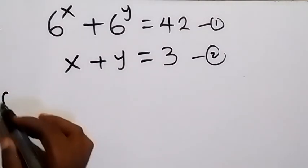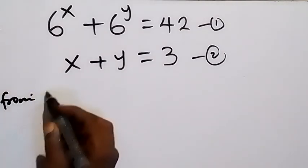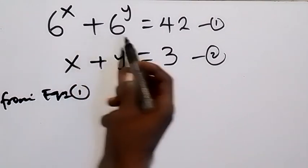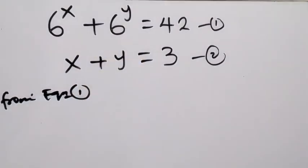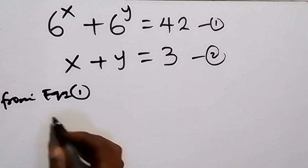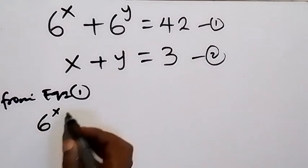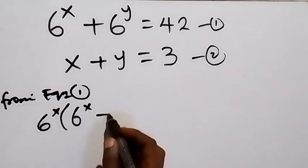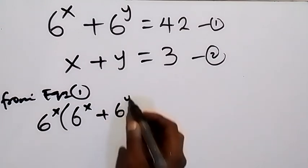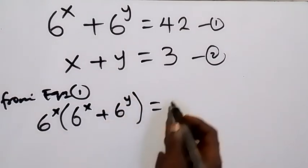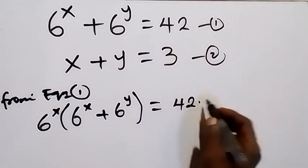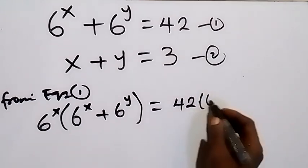From equation 1, let's multiply both sides by 6 raised to power x. So we have 6 raised to power x times 6 raised to power x, plus 6 raised to power y. On the right side we also multiply by 6 raised to power x, so we have 42 multiplied by 6 raised to power x.